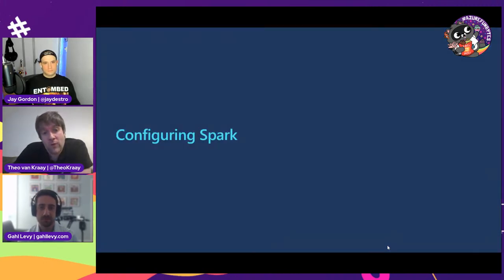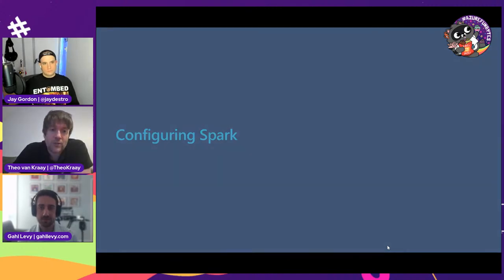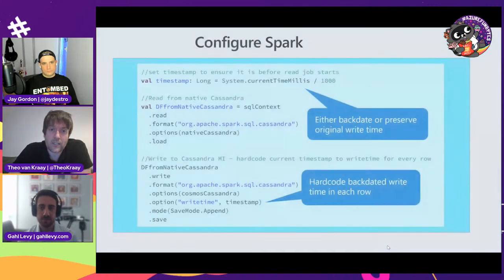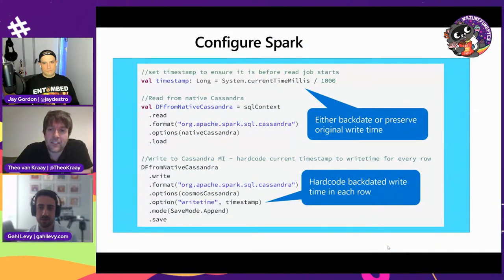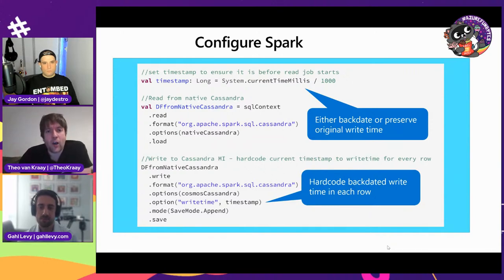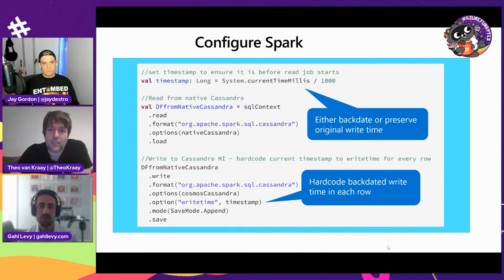What we recommend for doing the data copy is using Spark with the Cassandra Spark connector. You'd need to backdate or preserve the original write time so that when records are being copied over, they don't overwrite anything being updated live via the proxy.